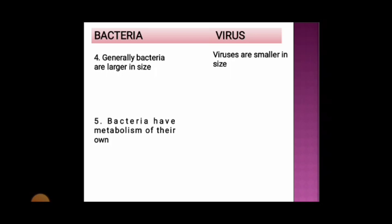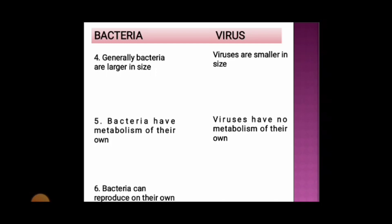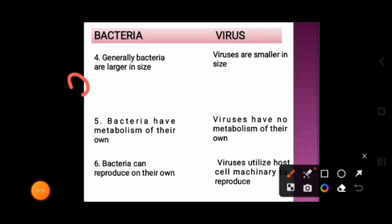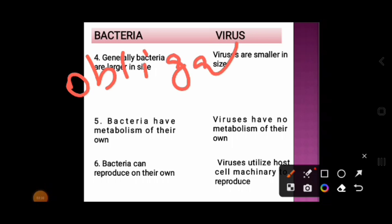Bacteria have their own metabolism, whereas viruses have no metabolism of their own. Bacteria can reproduce on their own, whereas viruses cannot reproduce on their own — they utilize the host cell machinery to reproduce. Without a living host, they are unable to reproduce. That's why viruses are known as obligate intracellular parasites.